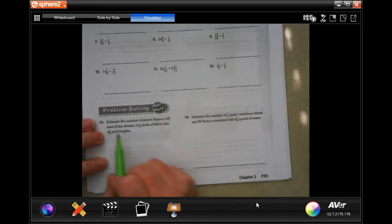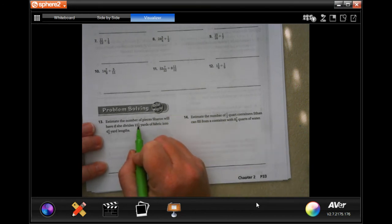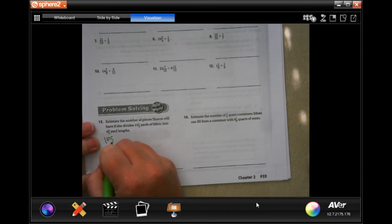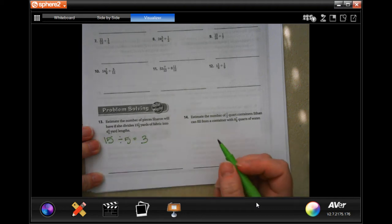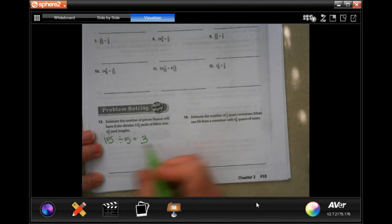We're going to estimate the number of pieces in number 13 that Sharon will have if she divides 15 and 1 third yards of fabric into 4 and 4 fifths. So 15 and 1 third, well, 1 is less than half of 3, so that's going to round to 15. She's dividing that into 4 and 4 fifths. Well, 4 fifths is more than half of 5. So that 4 over here is going to round up to 5. So 3 pieces. That's just an estimate.